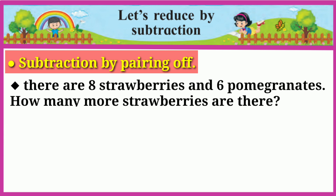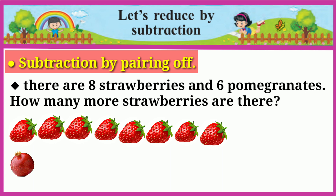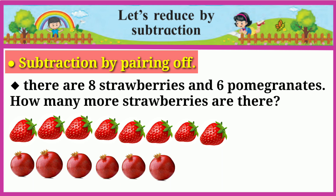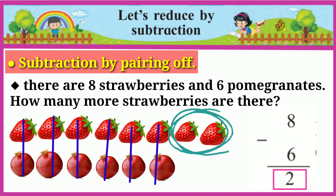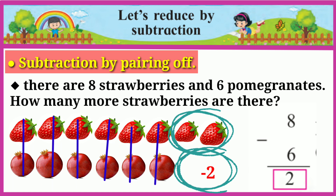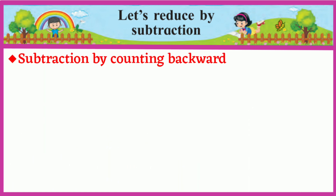There are eight strawberries and six pomegranates. How many more strawberries are there? Let us subtract to find the answer. There are two more strawberries than pomegranates, or there are two fewer pomegranates than strawberries.